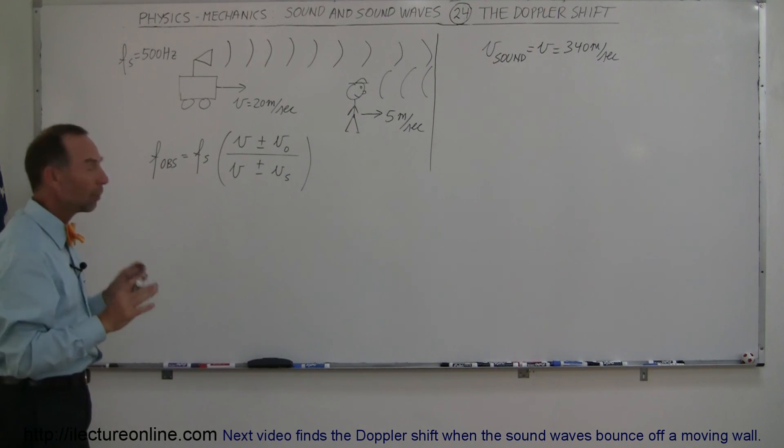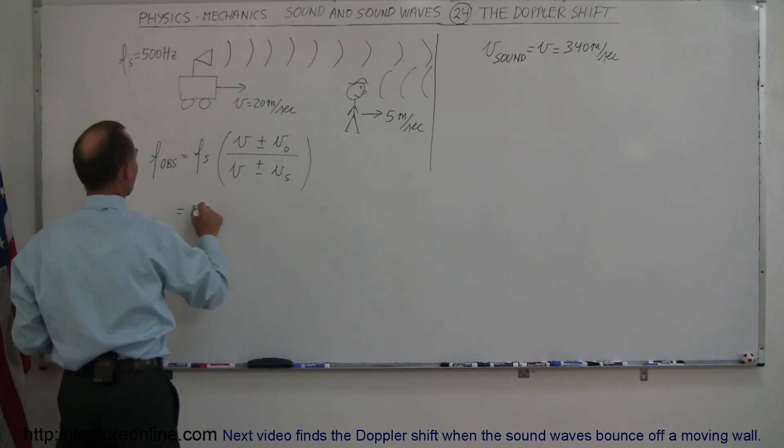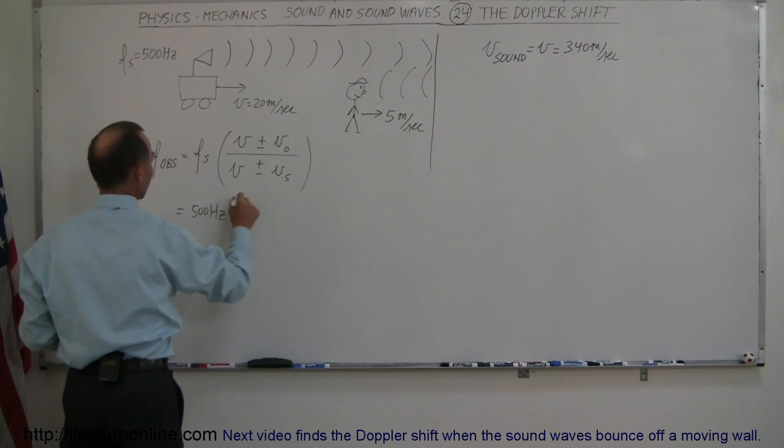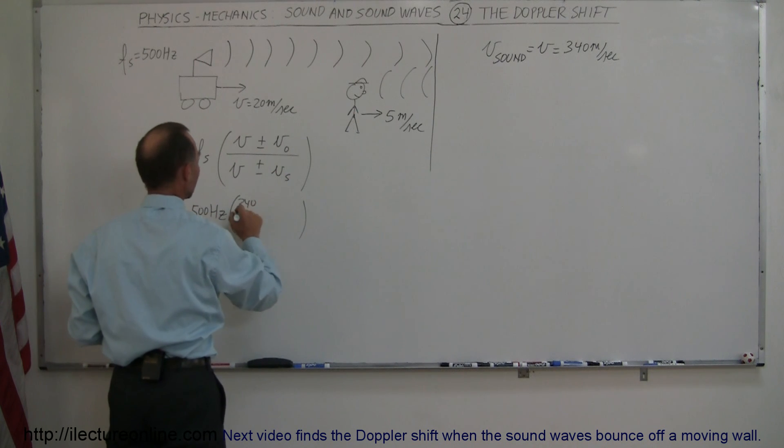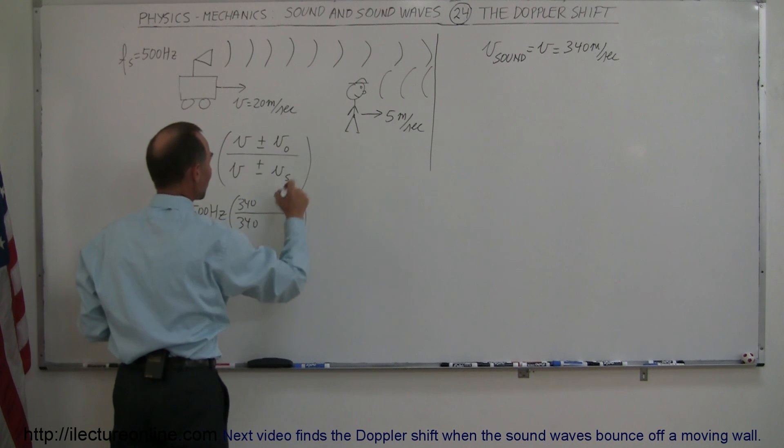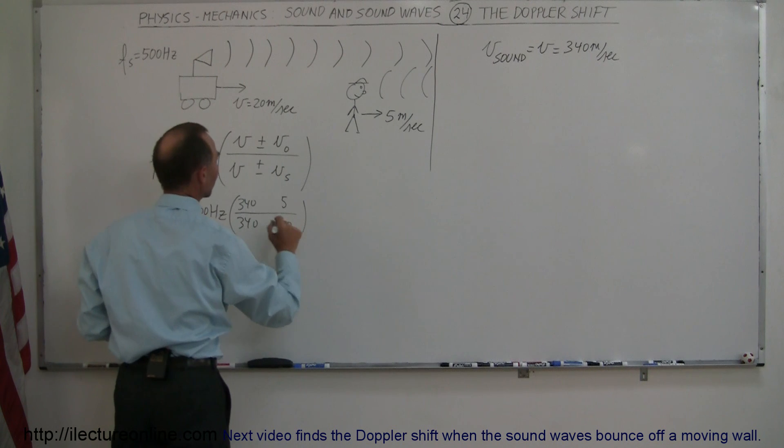We're going to plug in all the numbers and wait, don't put the signs in yet. So this is equal to 500 hertz times the velocity of sound in air is given to be 340 meters per second, and the velocity of the observer is 5 meters per second, the velocity of the source is 20 meters per second. I don't put the signs in yet.